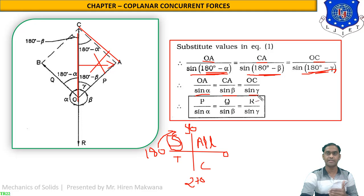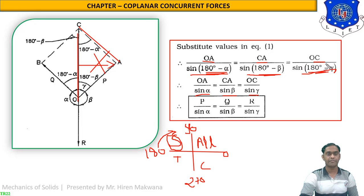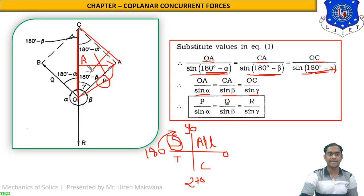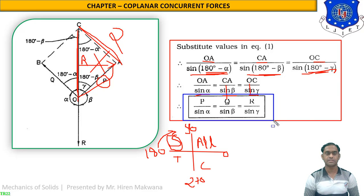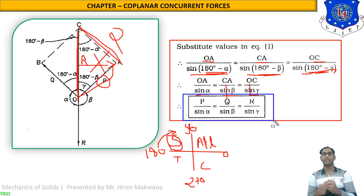From the figure, OA equals force P, OC equals force R, and CA equals force Q. Replacing these into the equation gives our final result: P/sin α = Q/sin β = R/sin γ. This is Lami's Theorem, which is proven. It is very important to practice and remember this proof.